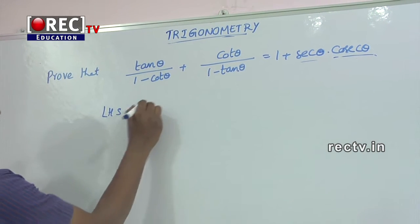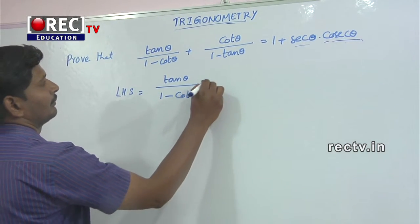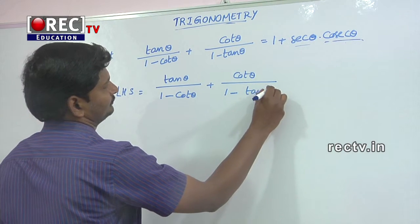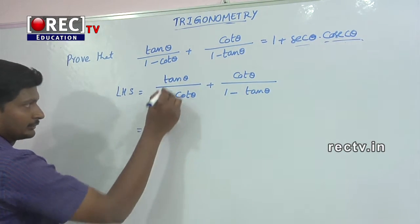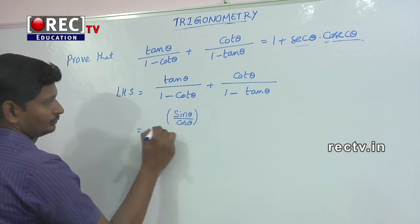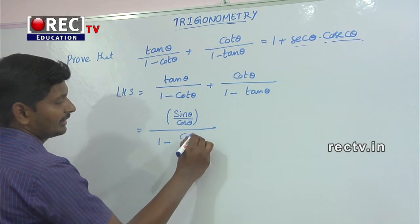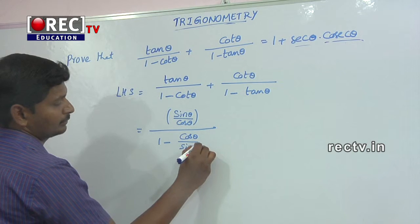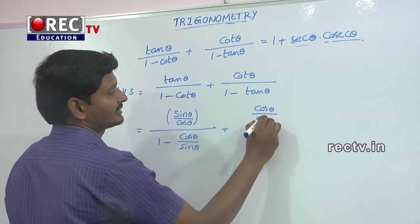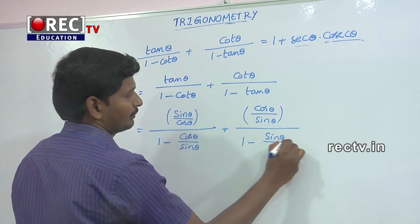LHS is equal to tan θ divided by (1 minus cot θ) plus cot θ divided by (1 minus tan θ). We write tan θ as sine θ divided by cos θ, and cot θ means cos θ divided by sine θ. Substituting these values into both terms.